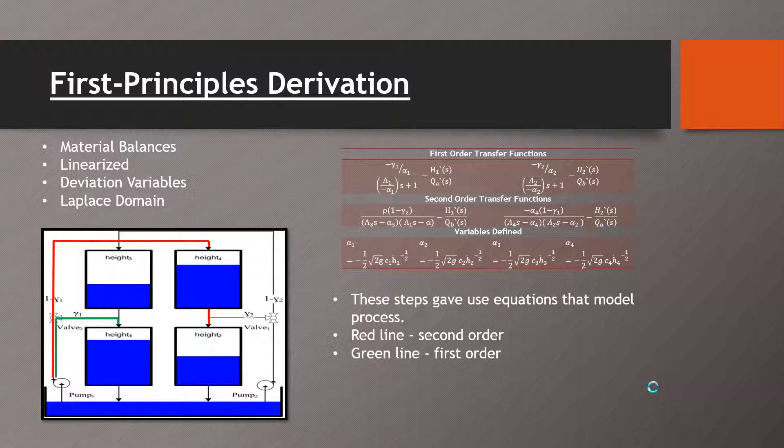In order to understand the dynamics of our reservoir network, we first need to derive our first principles derivation. By using our material balances, we linearized, put into deviation variables and then into the Laplace domain which gave us four transfer functions, two of which were first order and two that were second order. These model our process as you can see in the figure on the bottom left.